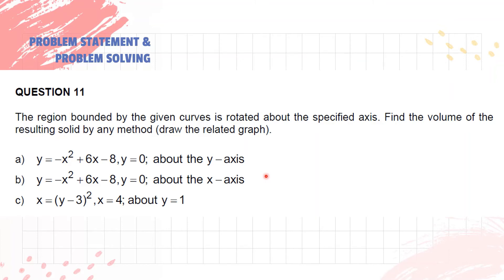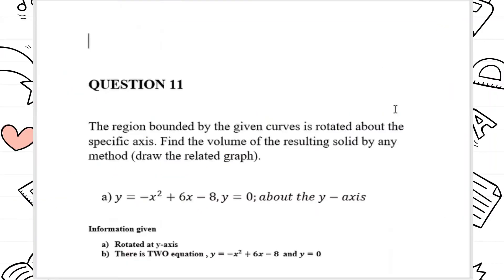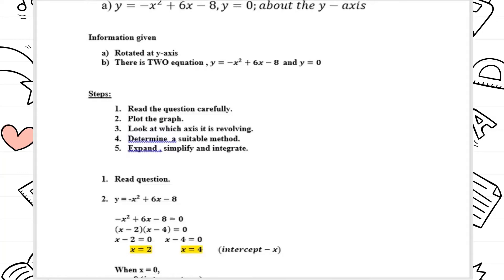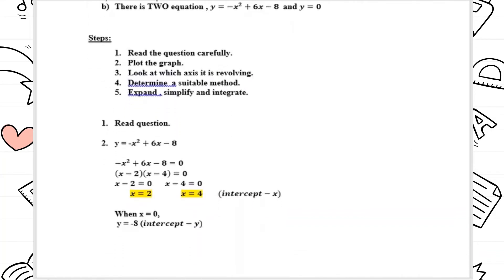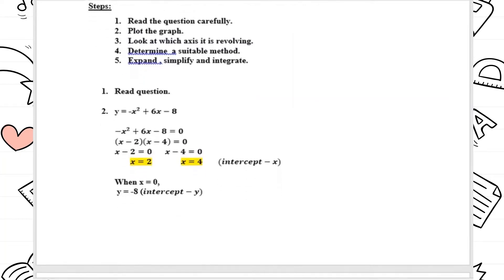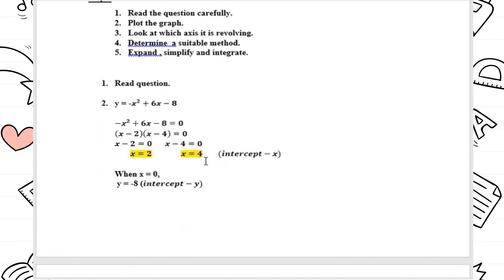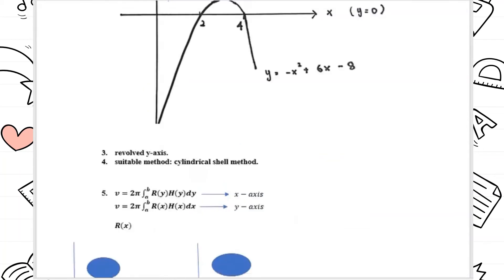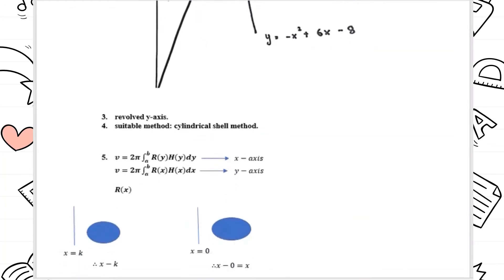Part B: y equals negative x squared plus 6x minus 8, y equals 0, about the x-axis. Part C: x equals bracket y minus 3 squared, x equals 4, about y equals 1. For question 11a, the curve is rotated about the y-axis and there are two equations. We plot the graph, find the x-intercept and y-intercept, and identify the shaded region. The cylindrical shell method is the suitable method here.